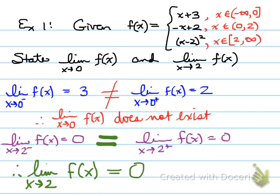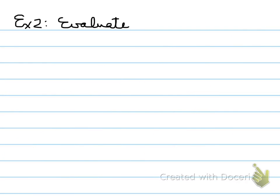All right, next one. Example number two, evaluate the following. Part A, the limit as x approaches zero of x plus three over x plus seven. What is the value going to be here?